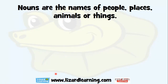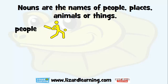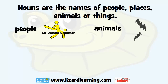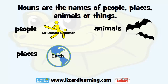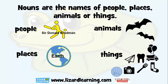So, back to what we first started with. Nouns are the names of people, places, animals, or things — just keep that in mind. People: batsman, captain, Sir Donald Bradman. Animals: bats. Places: Earth, Manhattan, Brisbane, Queensland. Things: the millions of things that are around us.